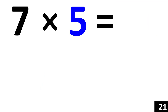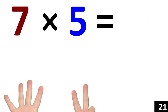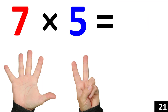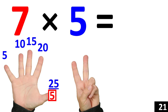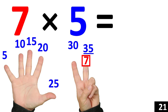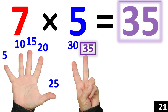7 times 5 is the same thing as counting by 5 seven times. 5. 10. 15. 20. 25. 30. 35. 7 times 5 is equal to 35.